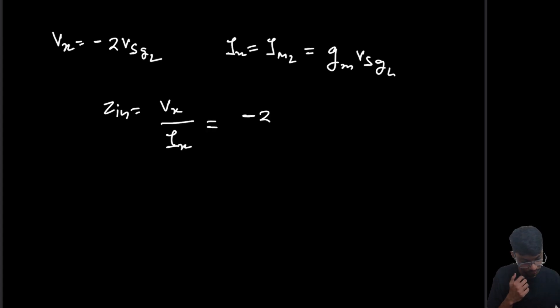So what is V_x by I_x? Z_in equals V_x by I_x, which equals minus 2 V_SG2 divided by gm V_SG2.